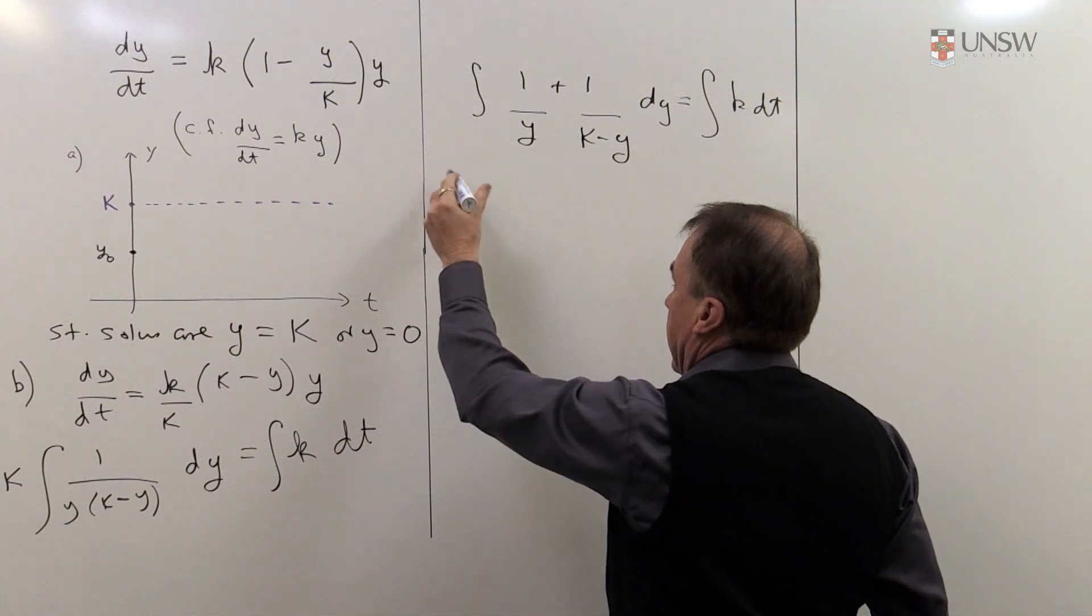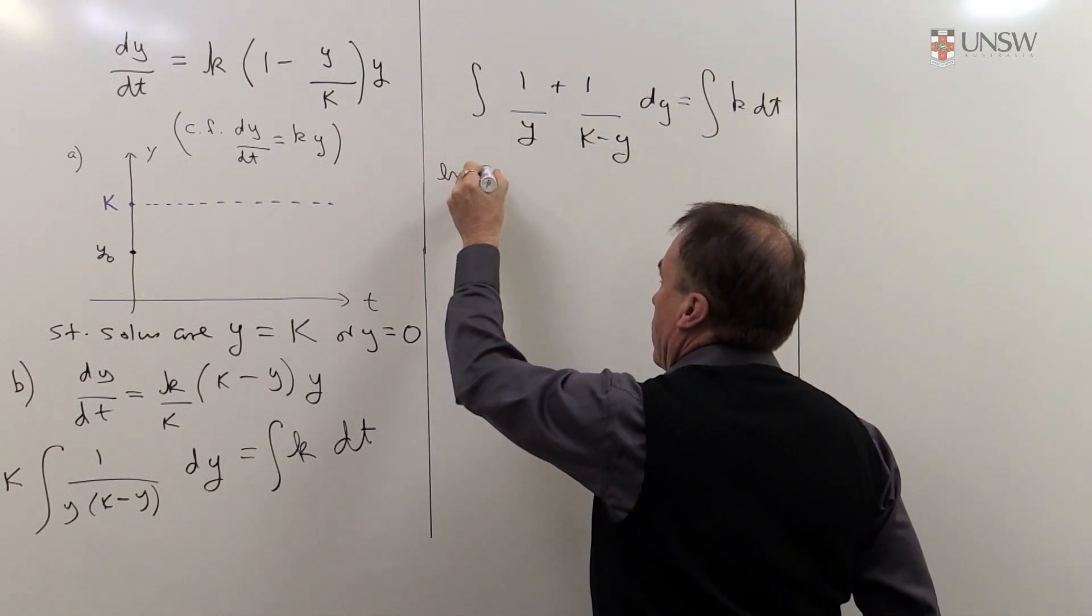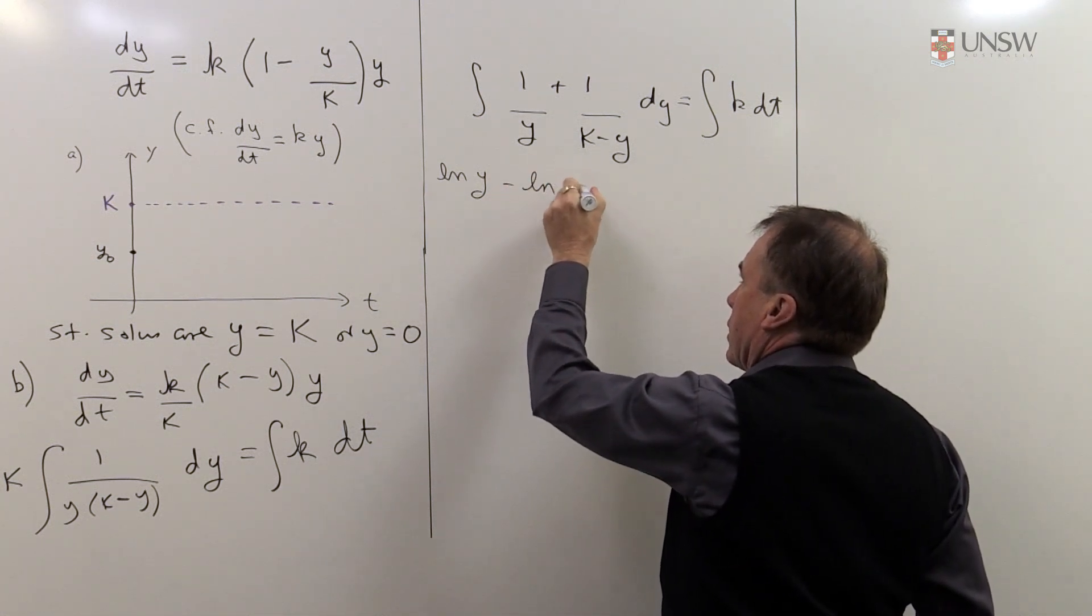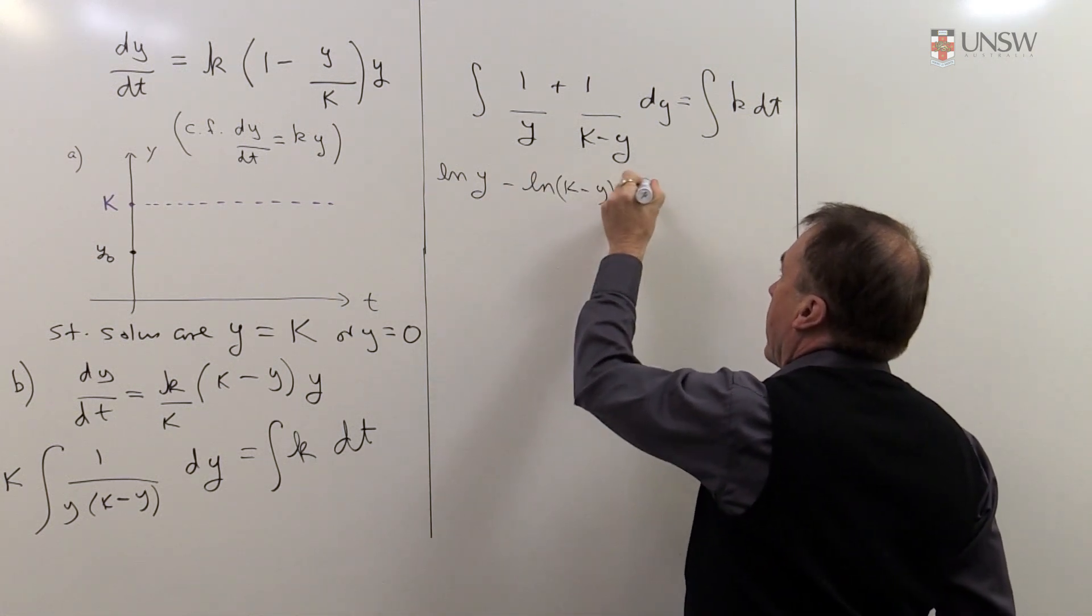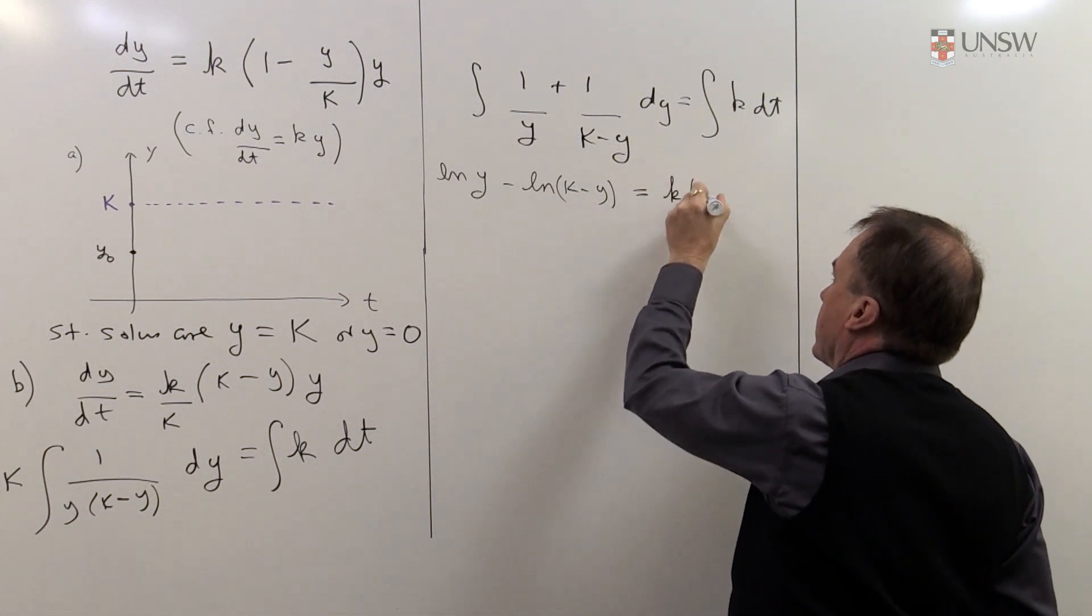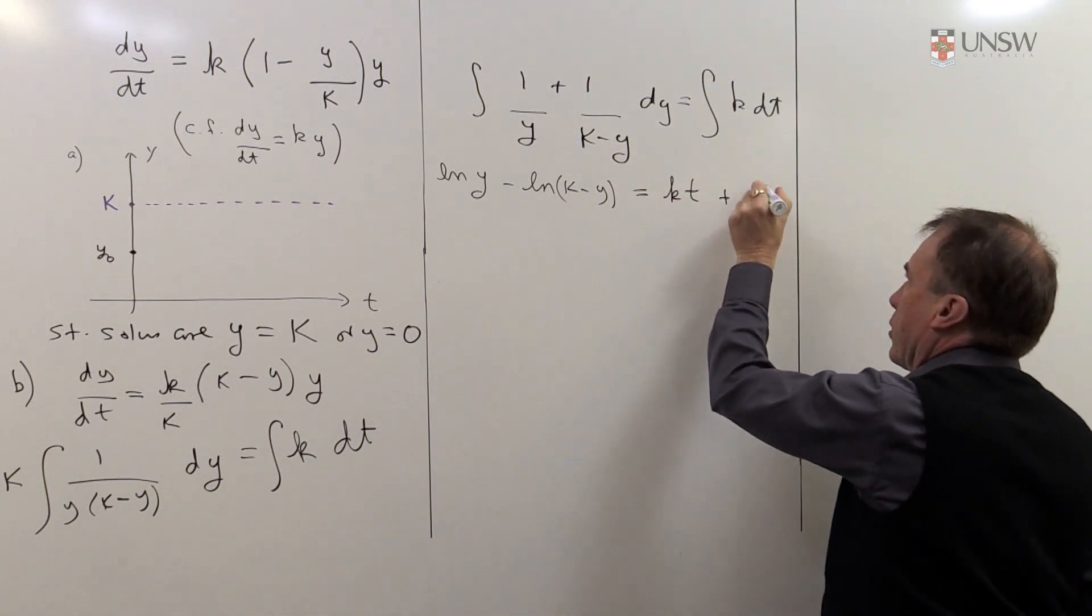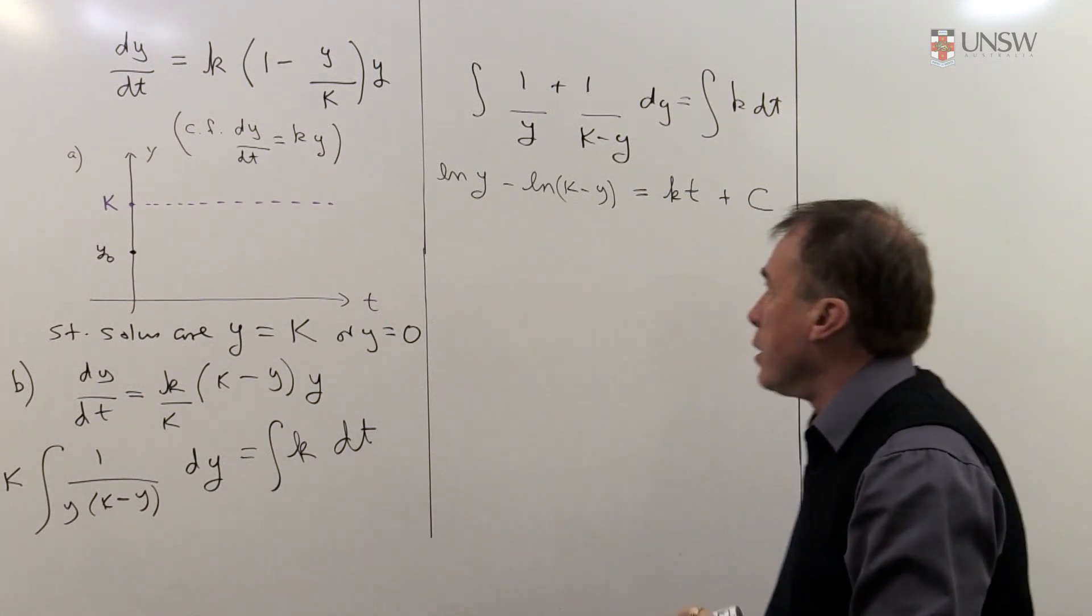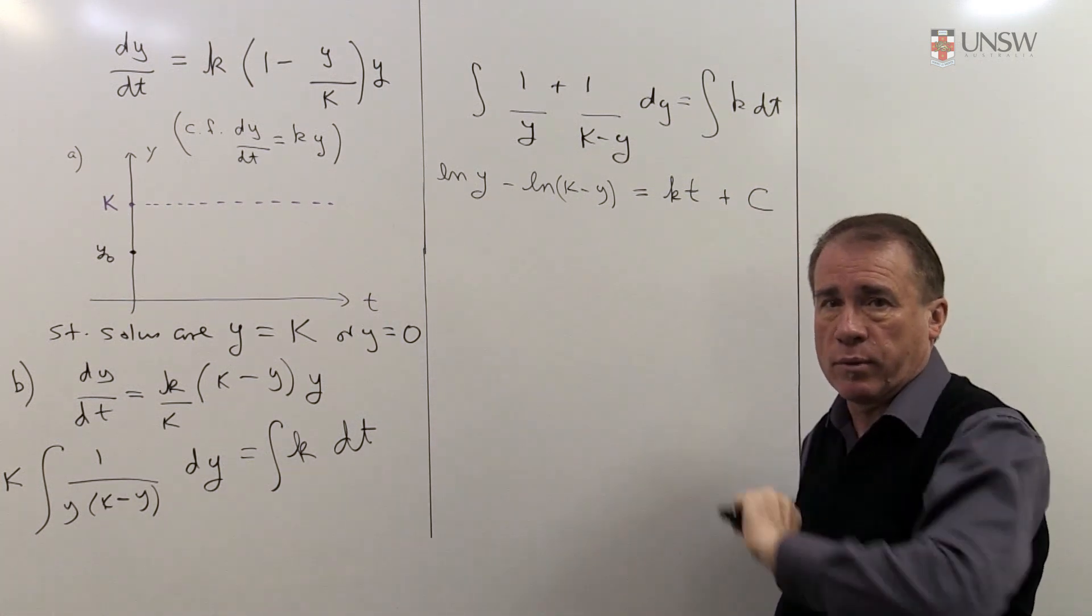Now I can do the integration. So I'm going to get a couple of logarithms. Be careful here. You've got a minus y, so you're going to get a minus log, k minus y. And on the other side, you'll get kt, and then I'll put, don't forget, the plus c, which is very important to add in the constant of integration. Don't need to put it on both sides. Just one of them will do.